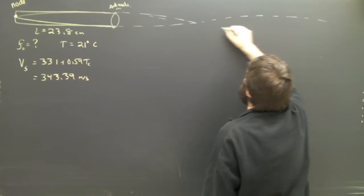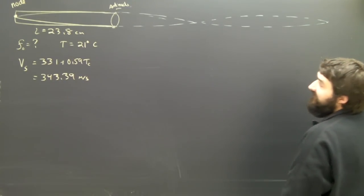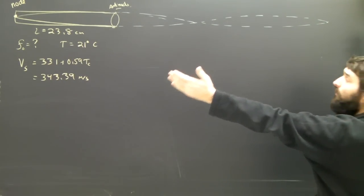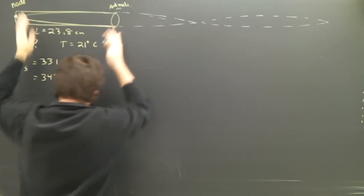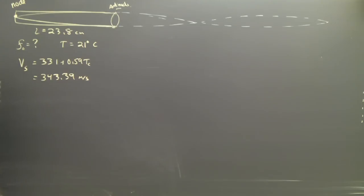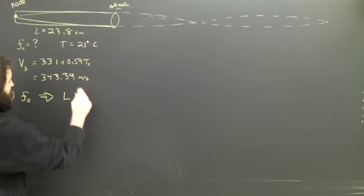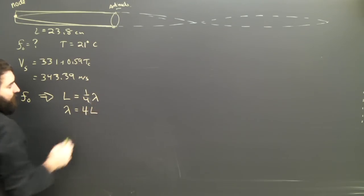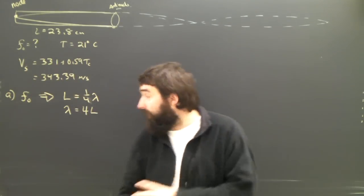And if I carried it on, we'd get another maximum. And if I carried it on, we'd get another node. So you can see that a whole wavelength would be much bigger than the length of the flute. And you can see, for part A, when we're trying to find the fundamental frequency, the length is equal to only one quarter of a wavelength, lambda. Which means that lambda is four times L.